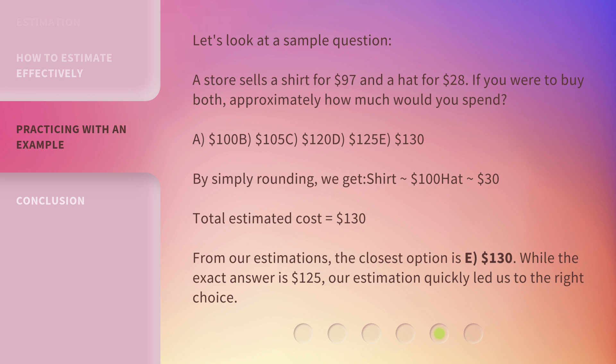By simply rounding, we get shirt approximately $100, hat approximately $30. Total estimated cost equals $130. From our estimations, the closest option is E. $130. While the exact answer is $125, our estimation quickly led us to the right choice.